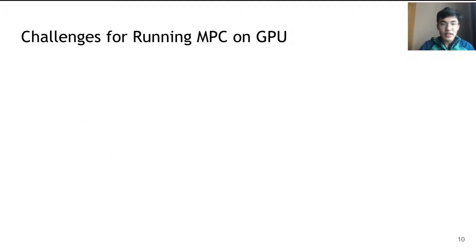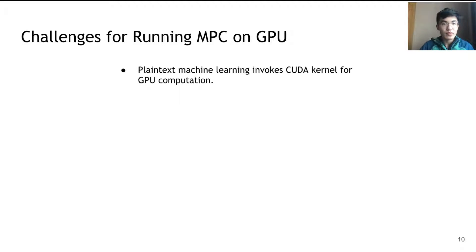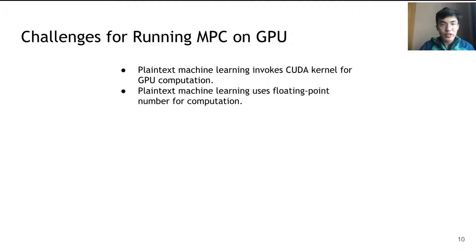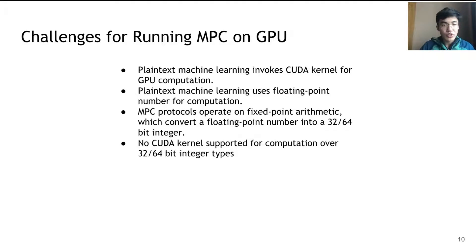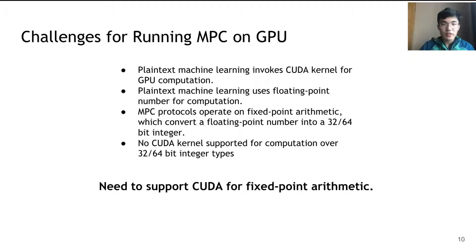However, it is not straightforward to directly support GPU for privacy-preserving machine learning. Plaintext machine learning performs GPU computation by invoking CUDA kernels and uses floating-point numbers. MPC protocols, however, operate on fixed-point arithmetic, which requires converting floating-point numbers into fixed-point representations as 32 or 64-bit integers. There are no CUDA kernels supported for computation over 32 or 64-bit integer types, so we need to support CUDA for fixed-point arithmetic.